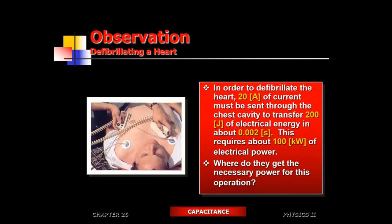Remember, the heart is located deep within the chest cavity. So you have to pump 20 amps of current while hoping that at least an amp of current is going to get to the heart and be able to stop it. A lot of that current is going to go wasted — it's just going to dissipate all over the place.